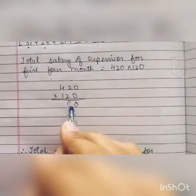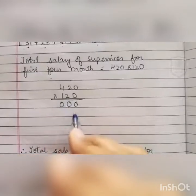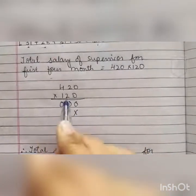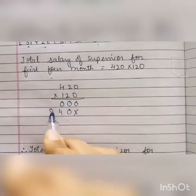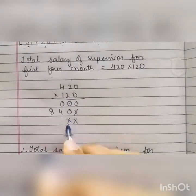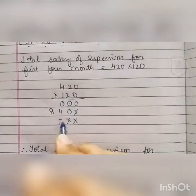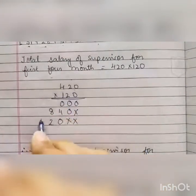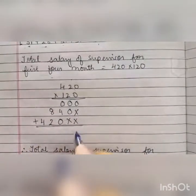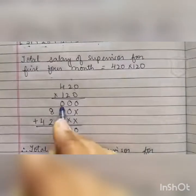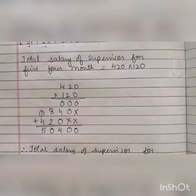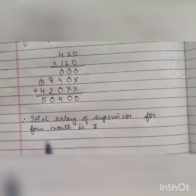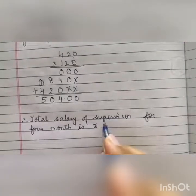Multiplying by 0 first: 0 multiplied by 2, 0 multiplied by 4 — everything is 0. Then we put 1 cross and multiply by 2: 2 times 0 is 0, 2 times 2 is 4, 2 times 4 is 8. Again we put 2 cross and multiply by 100: 1 times 0 is 0, 1 times 2 is 2, 1 times 4 is 4. Adding all three numbers: 0 plus 0 is 0, 0 plus 0 is 0, 4 plus 0 is 4, 8 plus 2 is 10 — write 0, carry over 1. 4 plus 1 is 5. So the total salary of the supervisor for 4 months is rupees 50,400.